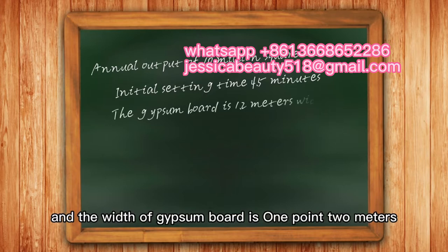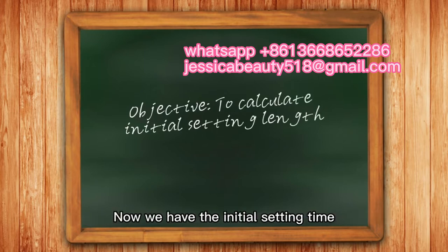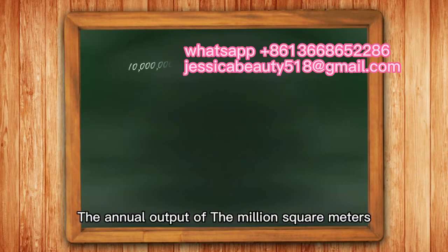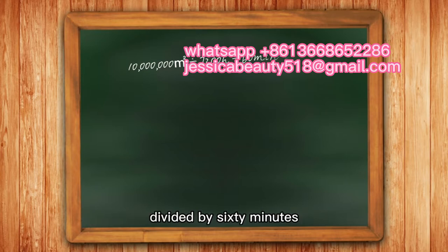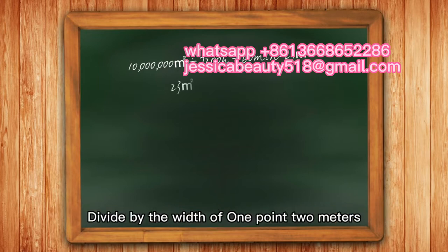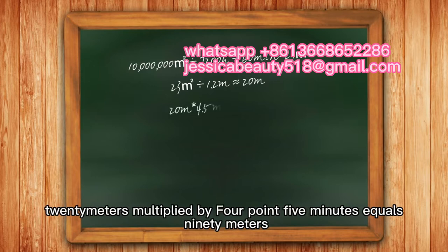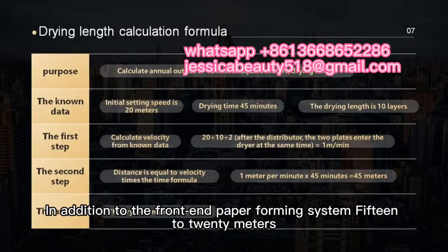Our purpose is to calculate the initial setting distance. We have the initial setting time, so the initial setting speed is also needed. The annual output of 10 million square meters divided by the number of working minutes per year gives the output per minute — approximately 23 square meters. Divided by the width of 1.2 meters, this equals approximately 20 meters per minute. 20 meters multiplied by 4.5 minutes equals 90 meters, which is the length of the initial setting system.